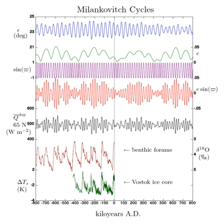The shape of the Earth's orbit varies between nearly circular, with the lowest eccentricity of 0.000055, and mildly elliptical; its geometric or logarithmic mean is 0.0019.